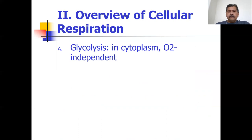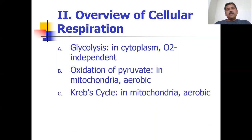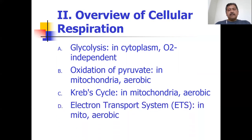Glycolysis happens in the cytoplasm and does not require any additional oxygen. All the rest of the reactions happen in the mitochondria and do require oxygen — we say they're aerobic. The oxidation of pyruvate, the Krebs cycle, and the electron transport system all happen in the mitochondria and are aerobic. The first step, glycolysis, happens in the cytoplasm and does not require oxygen, so we call it anaerobic.